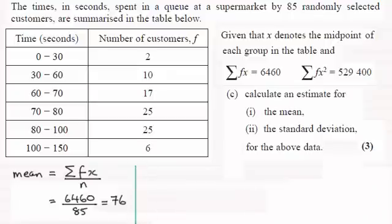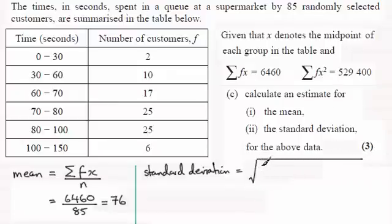And then next we're being asked to work out what the standard deviation is. And for the standard deviation, you should be familiar with this particular formula. And that formula is equal to the square root of the sum of f of x squared, so we've got sigma fx squared, and all of this is divided by n.